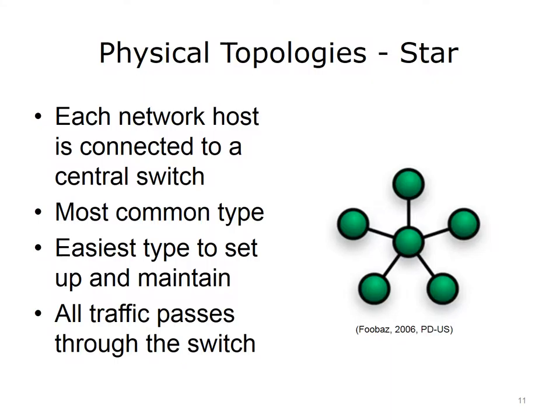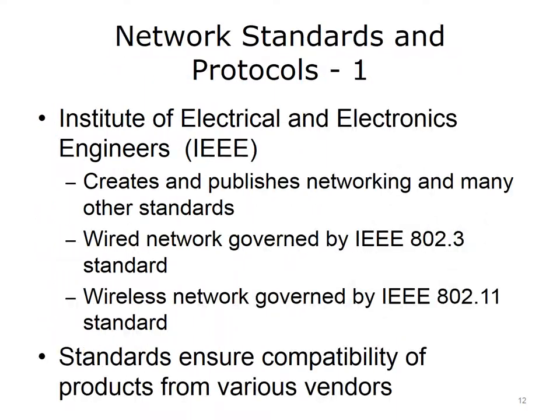The physical star topology is the most common topology type — it is the easiest to set up and maintain. In this environment, all traffic passes through the switch at the middle or hub of the network. At the ends of the star are end devices, such as computers and printers. An extended star topology exists when a number of switches are connected to each other. In an extended star topology, all hosts can communicate with all other hosts, assuming proper design, IP addressing, and appropriate network permissions. The Institute of Electrical and Electronics Engineers, or IEEE, creates and publishes networking and other standards.